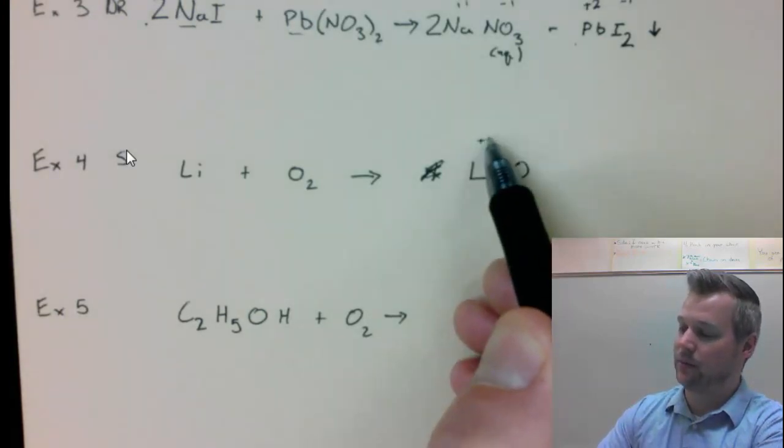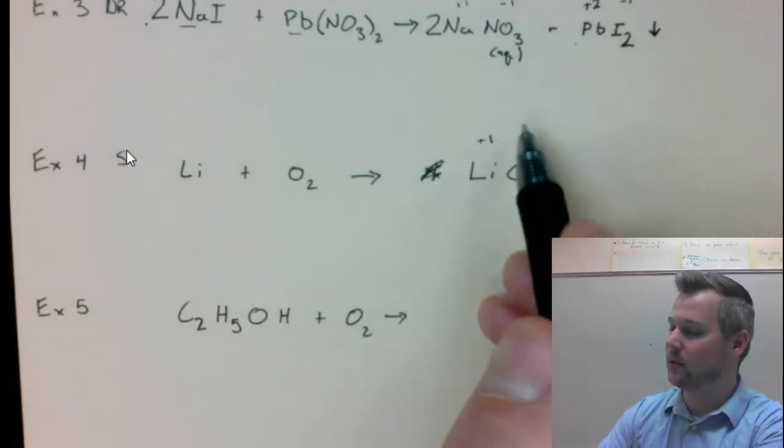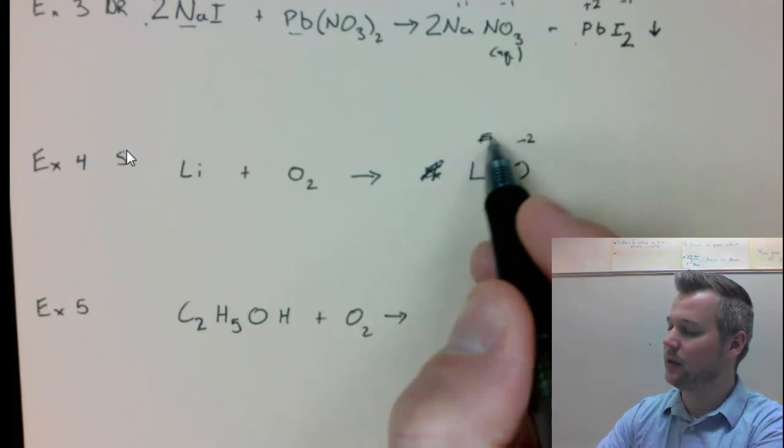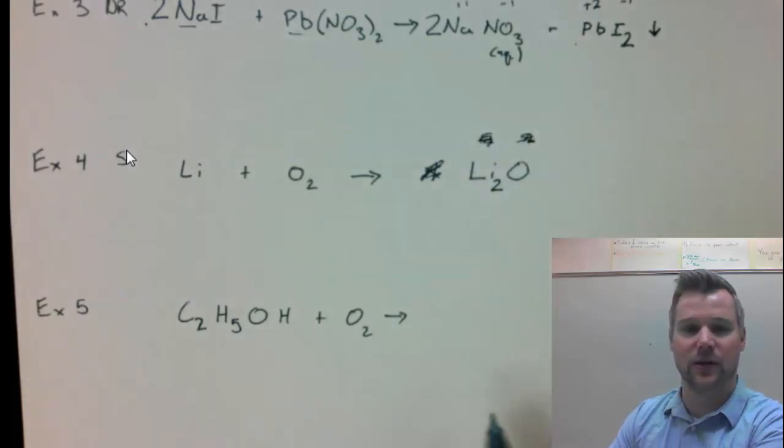Step number 3 is to check charges on ionics. Lithium is a group 1, so it's a plus 1 ion. Oxide is a group 6, so it's a minus 2 ion. So I need to crisscross. If you're using pencil, you should erase those.